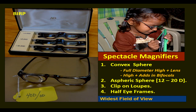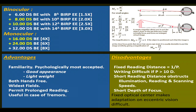Spectacle magnifiers help the user focus on text or objects while holding the object closer to the eye, and allow the widest field of view for reading compared to other aids. Binocular spectacle magnifiers are available from 6 diopter to 12 diopter or more with base-in relieving prism. Advantages include familiarity, psychological acceptance, good appearance, light weight, both hands free, widest field, and the ability to permit prolonged reading. Disadvantages include fixed reading distance, power inversely related to working distance, writing difficulty if power is more than 10 diopters, short reading distance, obstructed illumination, and fixed optical centers making eccentric viewing difficult.